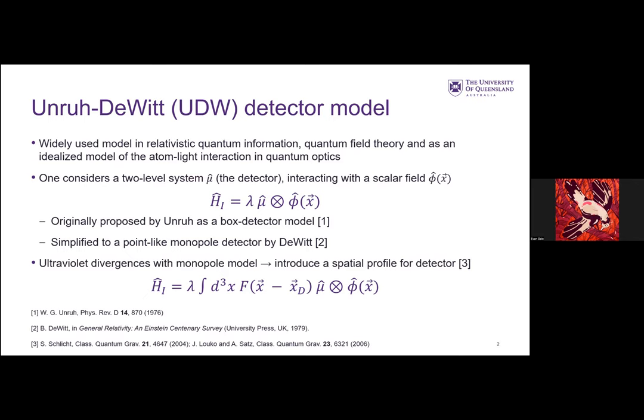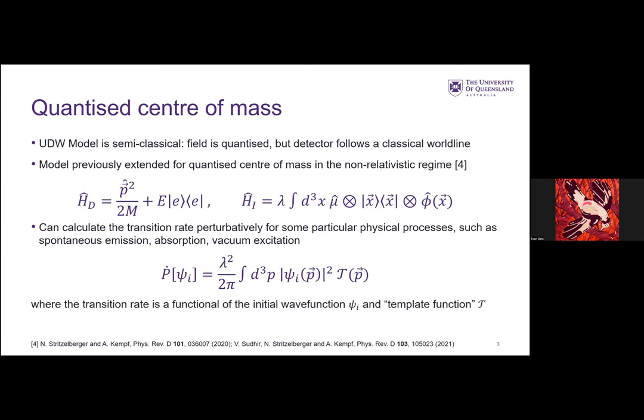What's very interesting is that this simplification is oftentimes undone because the monopole model suffers from ultraviolet divergences. There's a number of ways to resolve that issue, one of which, perhaps the most common in the literature, is to introduce a spatial profile for the detector, which I have down below. We have some smearing function for the detector here.